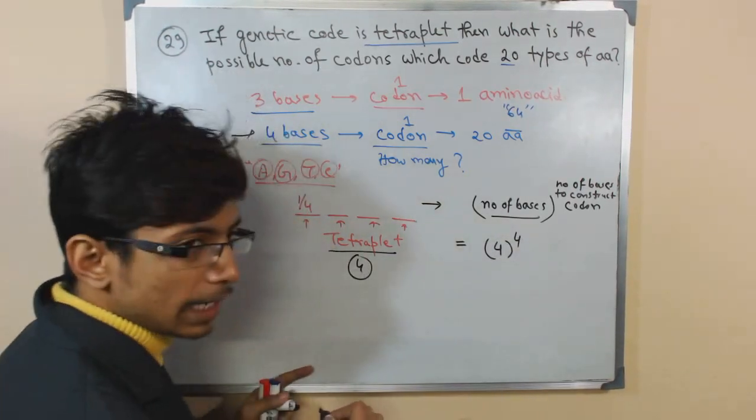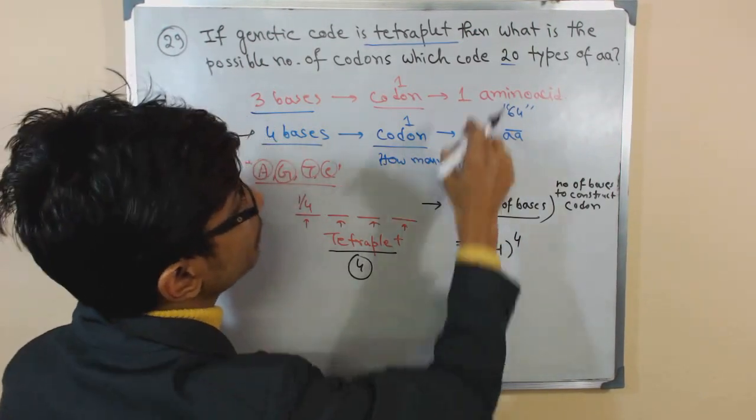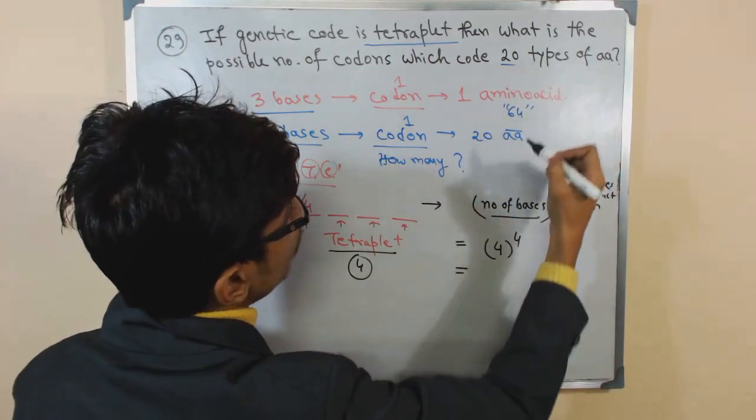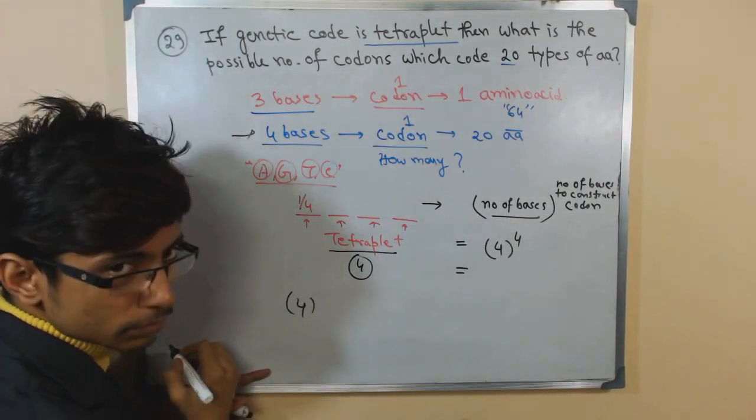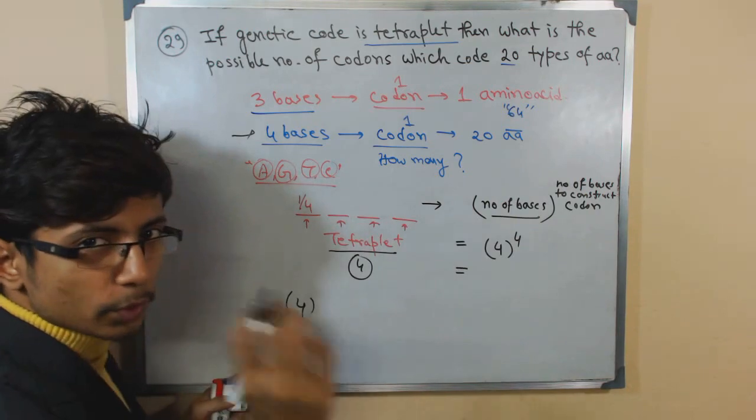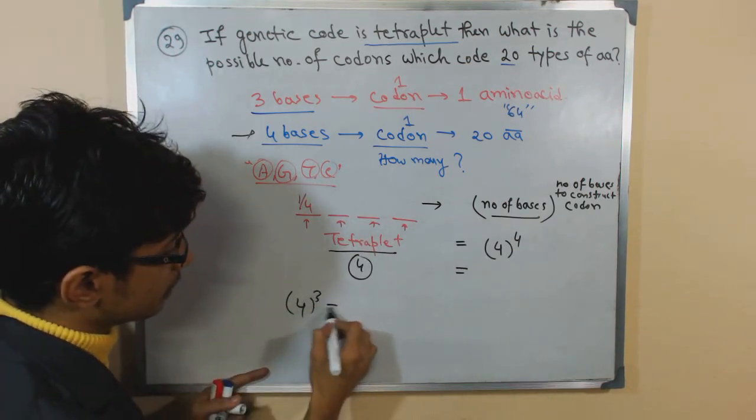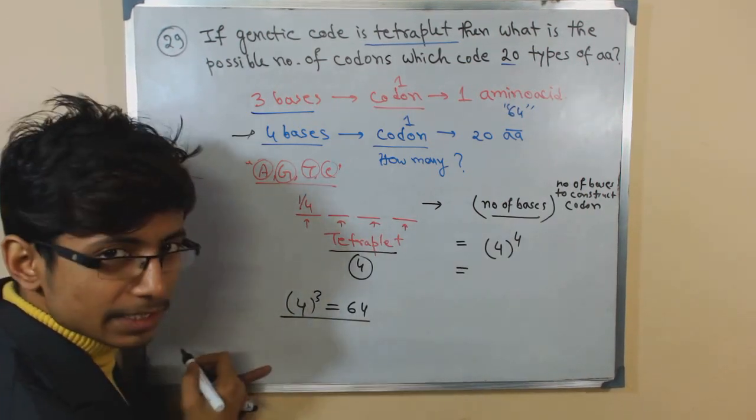In the previous case, in general terms, the number of bases we have is four, and the bases that produce a codon is triplet, so it was three, so we get 64—same formula.